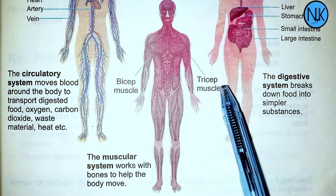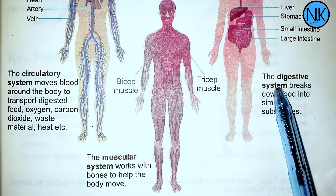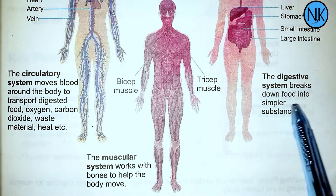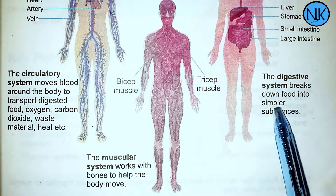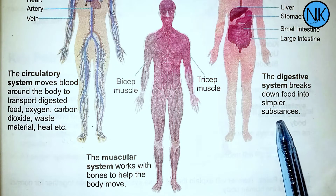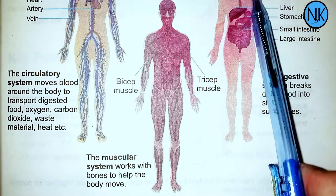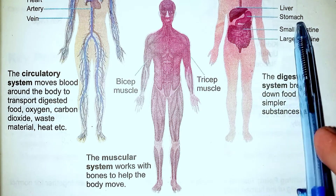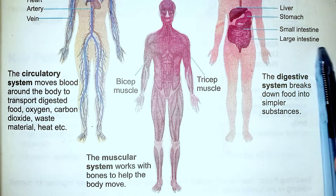The digestive system breaks down food into simple substances. It is the main system for processing food. It includes the small intestine and large intestine.